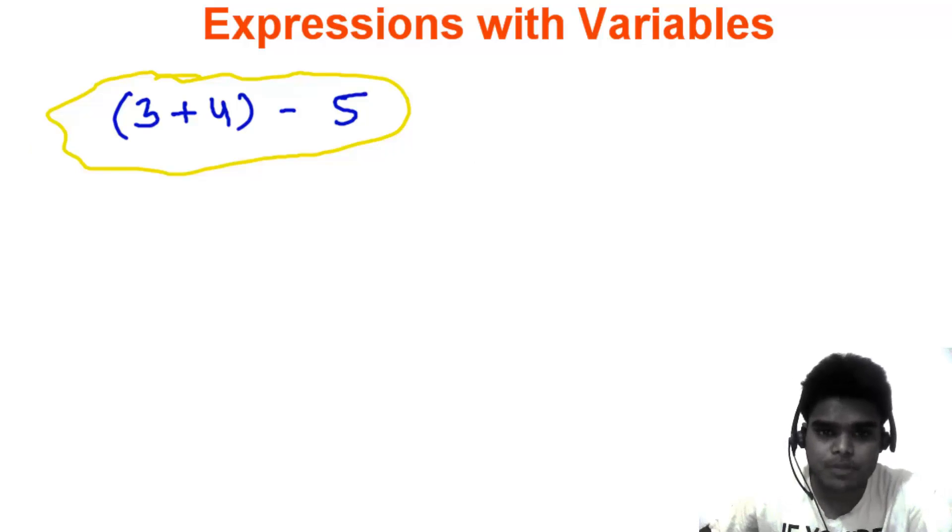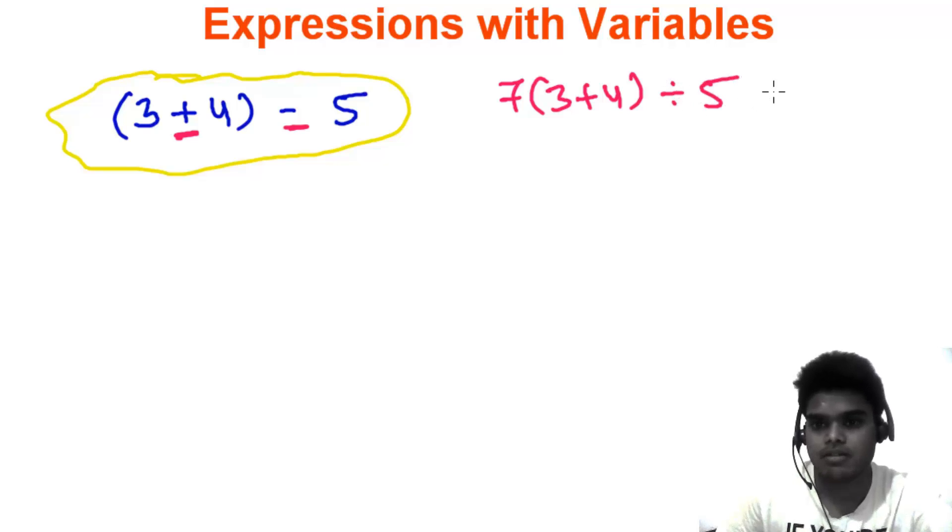And this type of expression is made with arithmetic operations: plus, minus, sometimes you will see multiplication also, like 3 plus 4, 7 times 3 plus 4, divided by 5. Like this.